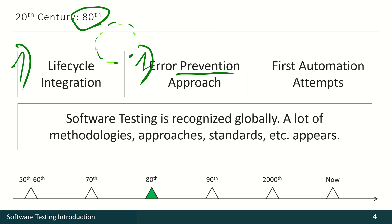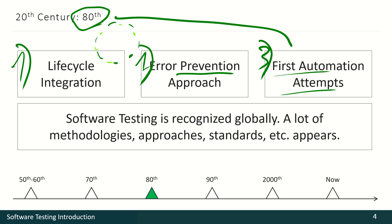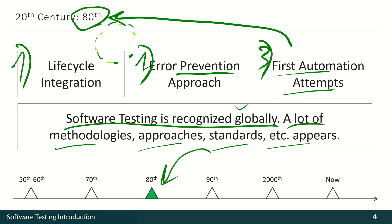Several first automation attempts were also made during the 80s of the last century. But what was especially significant at that time was that software testing was recognized globally — it was no longer just a couple of actions during the software development cycle. It was a wonderful change. As a result, a lot of methodologies, approaches, standards, and so on appeared during that time.